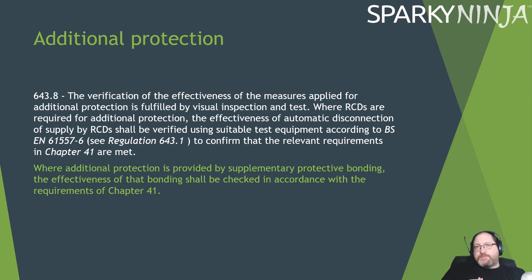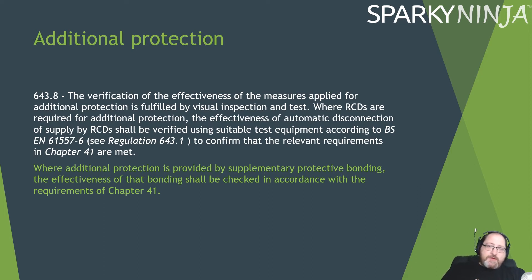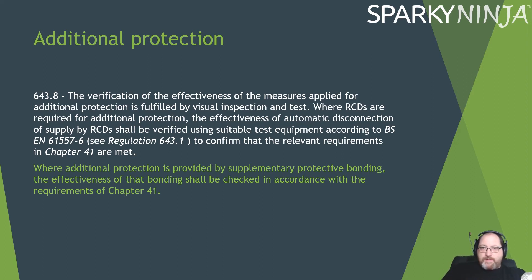Additional protection: if additional protection is provided by supplementary protective bonding, the effectiveness of that bonding shall be checked in accordance with the requirements of Chapter 41. So you're going to obviously measure the RA of that, or the resistance of that.